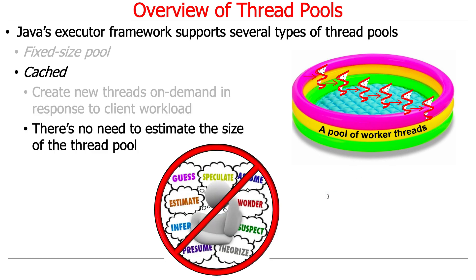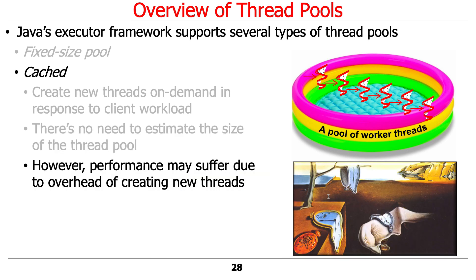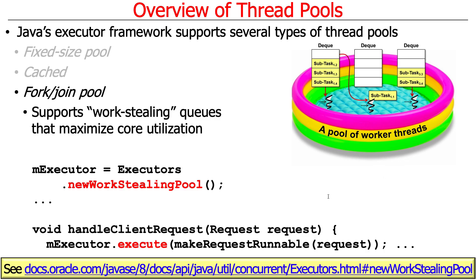The nice thing about cached thread pools is you don't really have to estimate the size of the pool — it's determined for you as the work shows up. The downside is you've got to create new threads on the fly, and you're not quite getting the benefits of amortization unless you're able to reuse them during bursts.